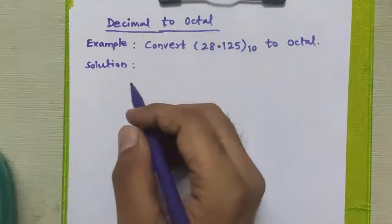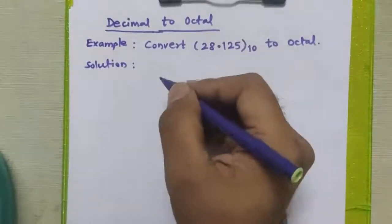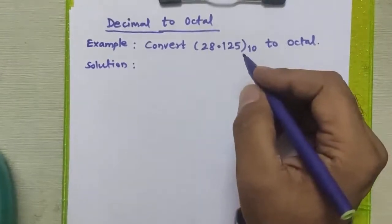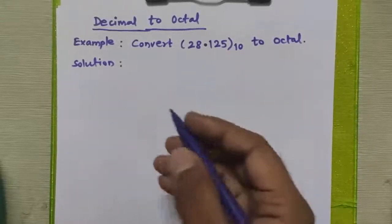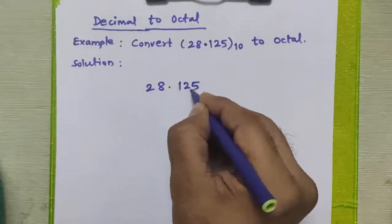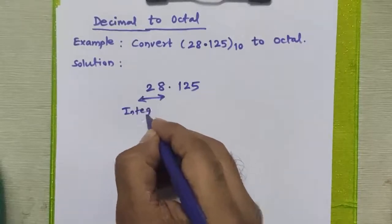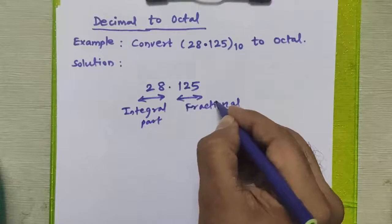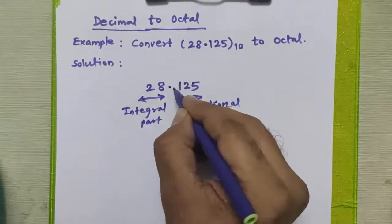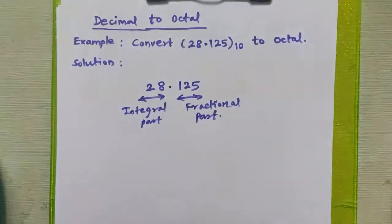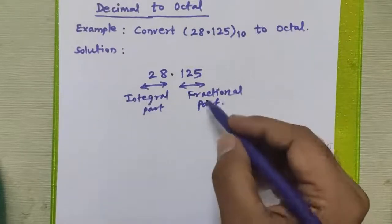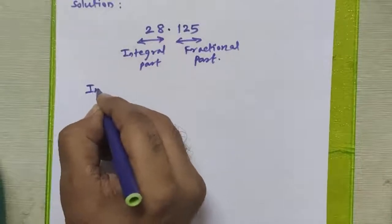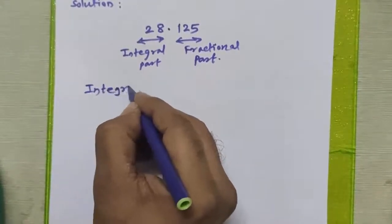Hello friends. In this video we are going to study how to convert a decimal number to an octal number. Consider the number 28.125 decimal, which we need to convert to octal. The given number has two parts: the first part is called the integral part (before the decimal point), and the other part is called the fractional part (after the decimal point). We are going to apply a different procedure to convert each part to octal.